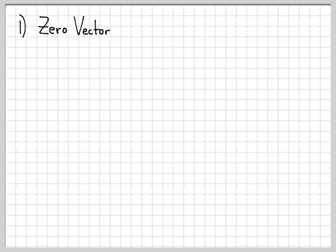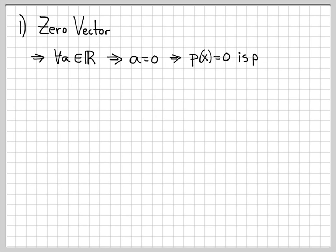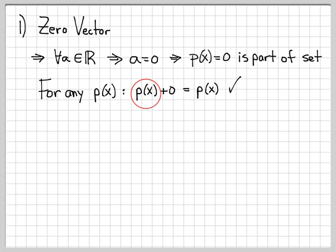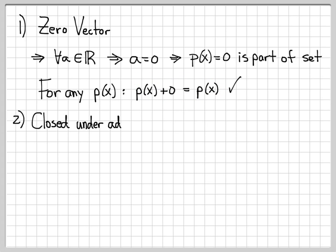First, does this collection of vectors contain the zero vector? Since A can be any value in the reals, I can let A equal zero. That means my set contains the polynomial P(x) = 0. For any arbitrary P(x) in my set — whether it's Bx³, 1.2x³, or A2x³ — I can add zero to it and end up back where I started. So P(x) = 0 is in the set and satisfies the zero vector property. Checkbox on the zero vector.